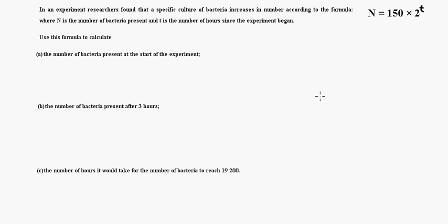It says, in an experiment, researchers found that a specific culture of bacteria increases in number according to the formula. The number equals 150 times 2 to the t power, where n is the number of bacteria present and t is the number of hours since the experiment began. Use this formula to calculate the number of bacteria present at the start of the experiment. Well, at the start of the experiment, that's when t is going to equal zero.